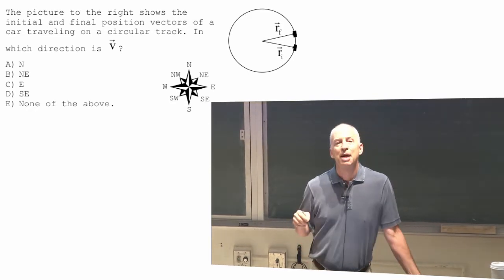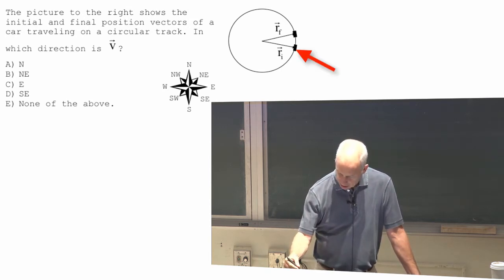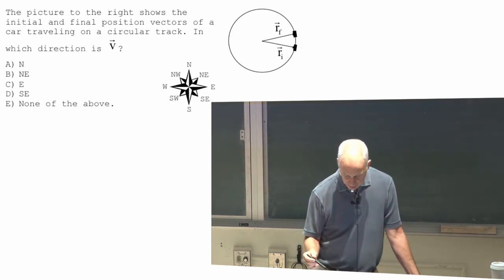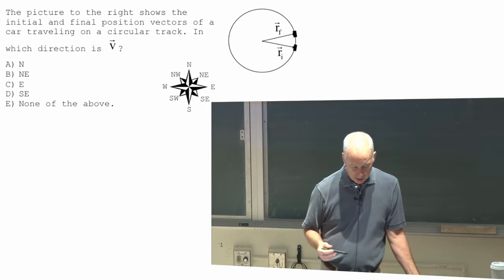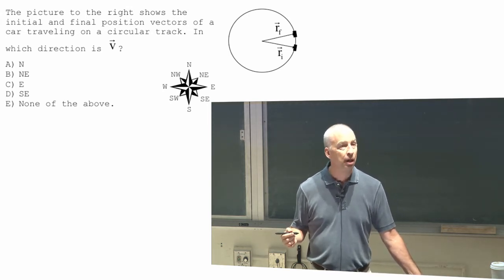Here's a car that's going around in a circle counterclockwise. There's a car earlier in time, later on in time it's over there. What's the direction of V? In other words, what's the direction of delta R?